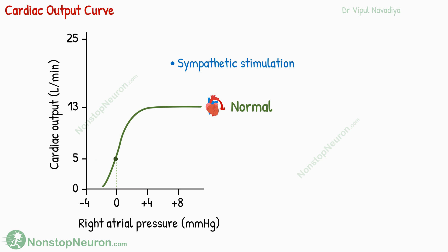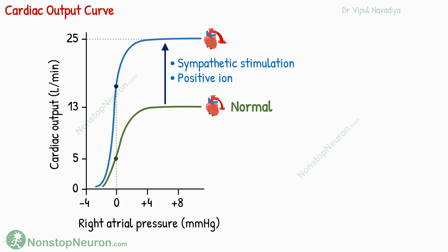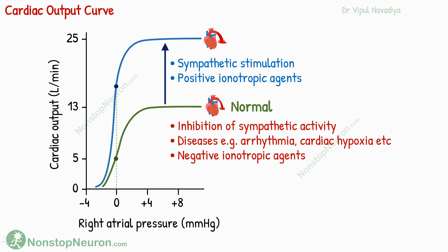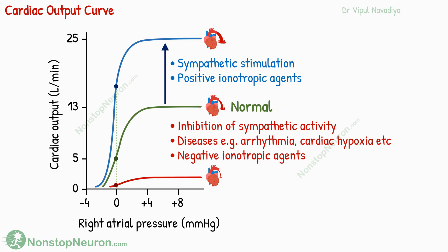However, under sympathetic stimulation, the same right atrial pressure results in an even greater increase in cardiac output. The maximum cardiac output achievable also increases, thus the curve is shifted up. The same is seen when we give positive inotropic agents like cardiac glycosides. On the other hand, inhibition of sympathetic activity and pathological conditions like arrhythmia, cardiac hypoxia, and myocarditis decrease cardiac output for each level of right atrial pressure, shifting the curve down.